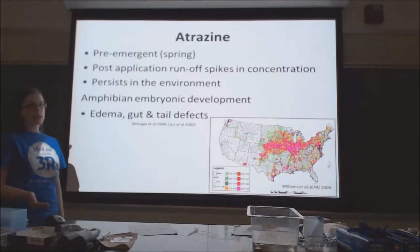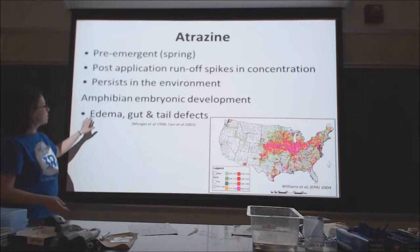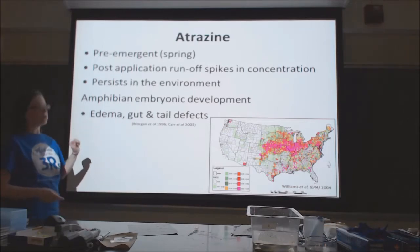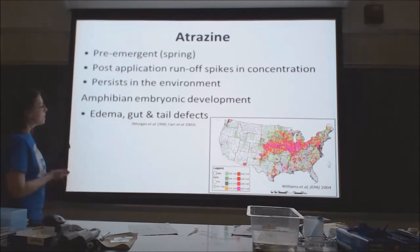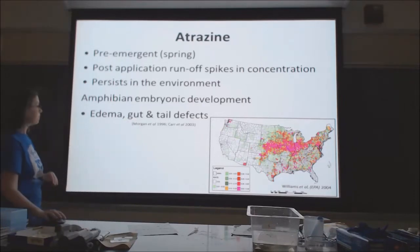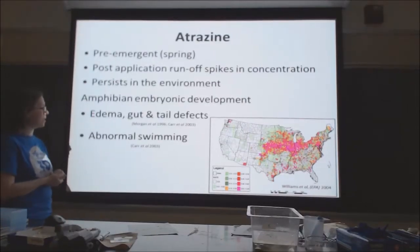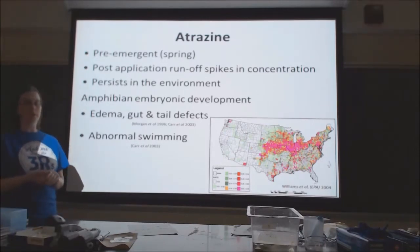Previous studies indicate that atrazine could cause problems with amphibian development. For example, a couple of studies reported that atrazine exposure led to increased incidence of edemas, which are fluid-filled cavities, as well as increased gut defects and tail defects. Another study reported abnormal swimming in tadpoles that had been exposed to atrazine during development.